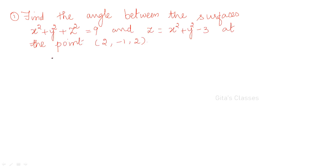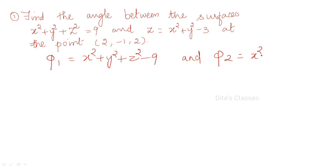So there are two different surfaces. Let us take phi1 = x² + y² + z² − 9 and phi2 = x² + y² − z − 3. These are our phi1 and phi2, the given surfaces. Angle between the surfaces means angle between their normals. If you find out the angle between the normals, that will give you the angle between the surfaces.